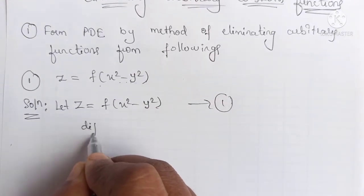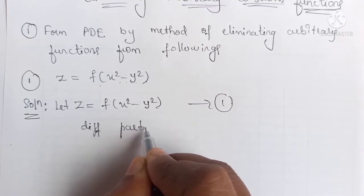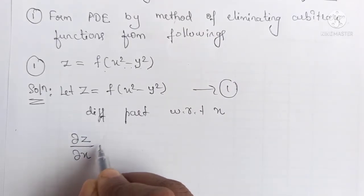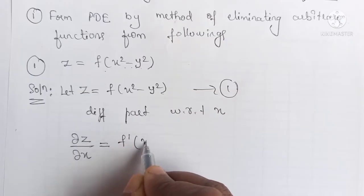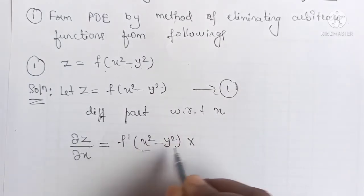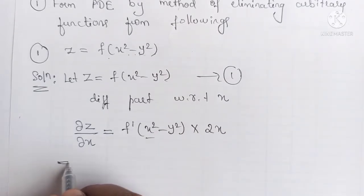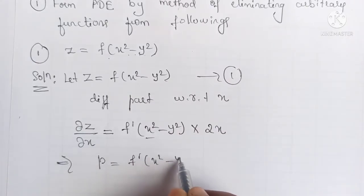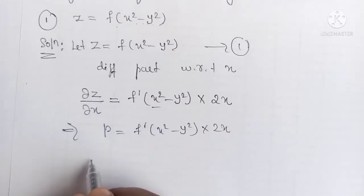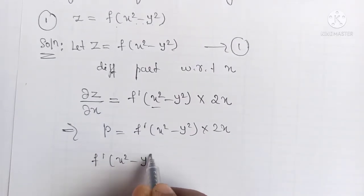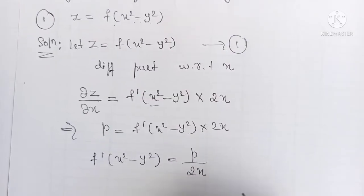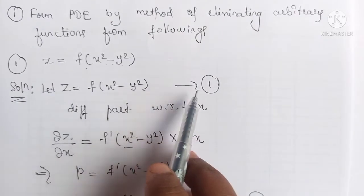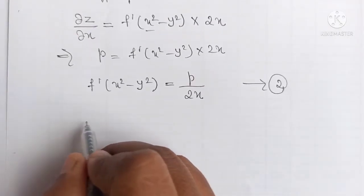Differentiating equation 1 partially with respect to x, we get dou z by dou x equals f dash of (x² − y²) into 2x, which can be written as p equals f dash of (x² − y²) into 2x. So f dash of (x² − y²) equals p divided by 2x. Consider this as equation 2.